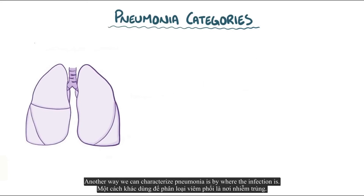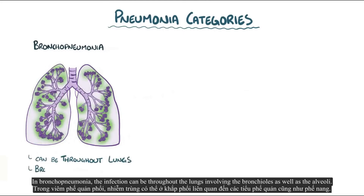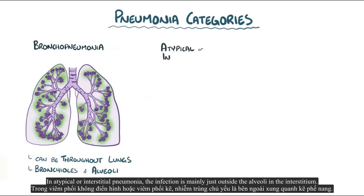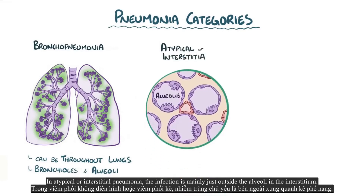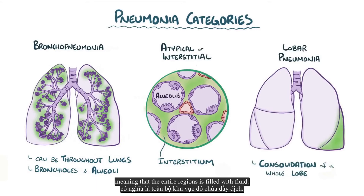Another way to characterize pneumonia is by where the infection is. In bronchopneumonia, the infection can be throughout the lungs, involving the bronchioles as well as the alveoli. In atypical or interstitial pneumonia, the infection is mainly just outside the alveoli in the interstitium. And in lobar pneumonia, the infection causes complete consolidation of a whole lobe of the lung, meaning the entire region is filled with fluid.